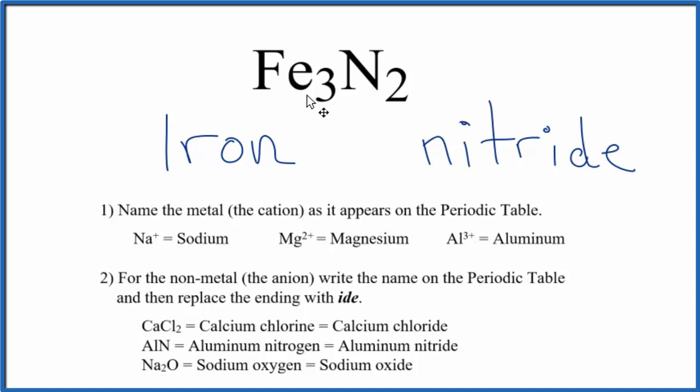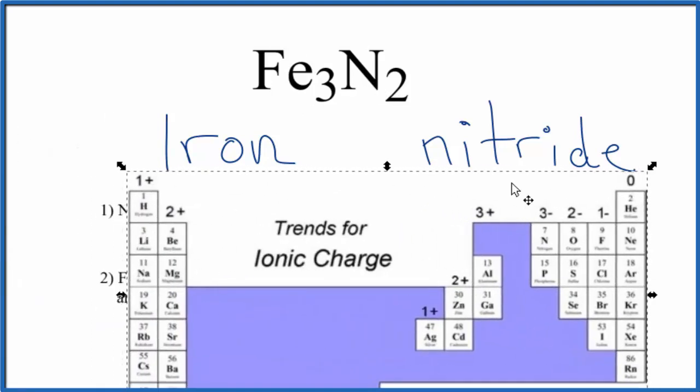But iron is a transition metal. That means it can have different ionic charges based on what it's bonded to. Here it's bonded to nitrogen. So let's look at the charge on the nitrogen from the periodic table. Nitrogen has a 3 minus ionic charge. That's each nitrogen has a 3 minus ionic charge.